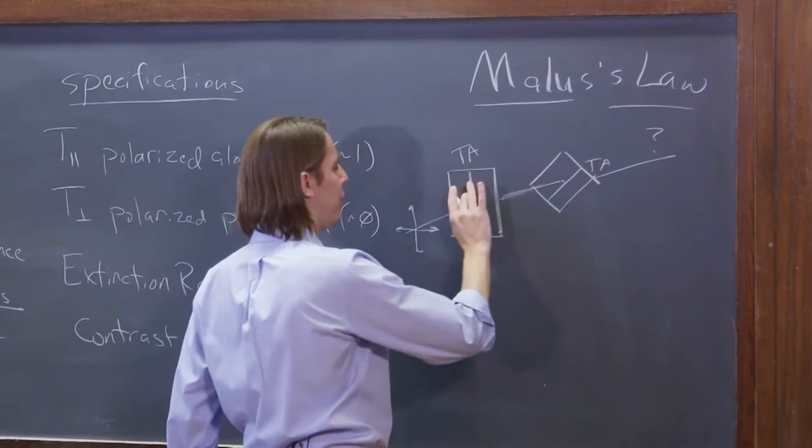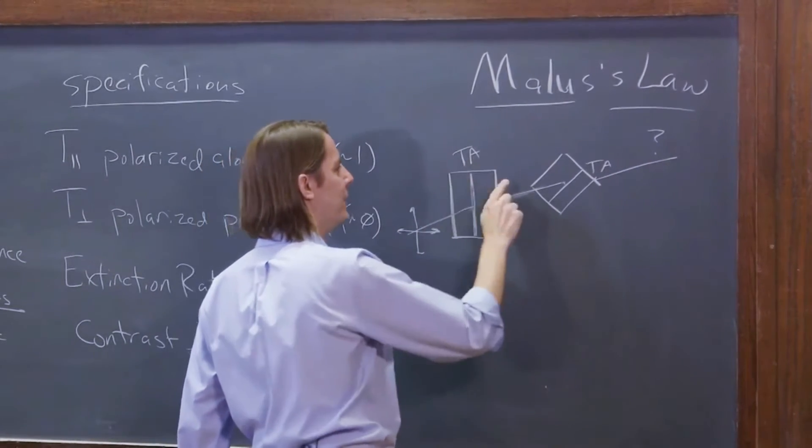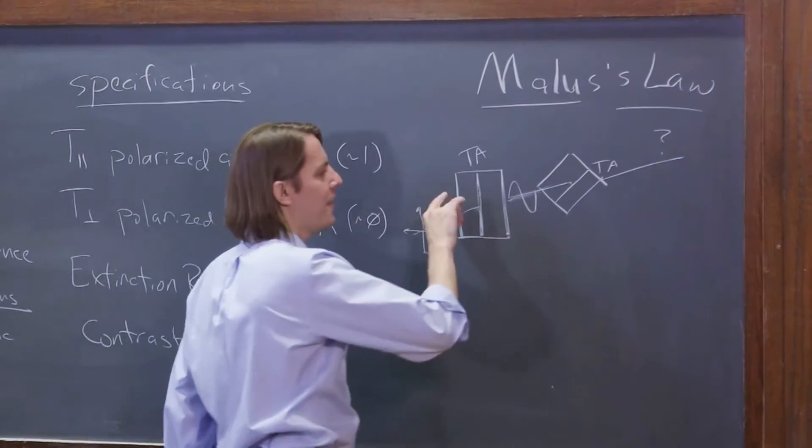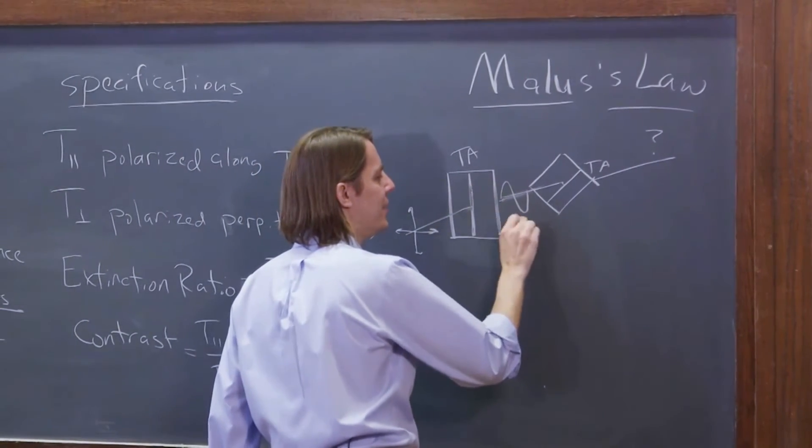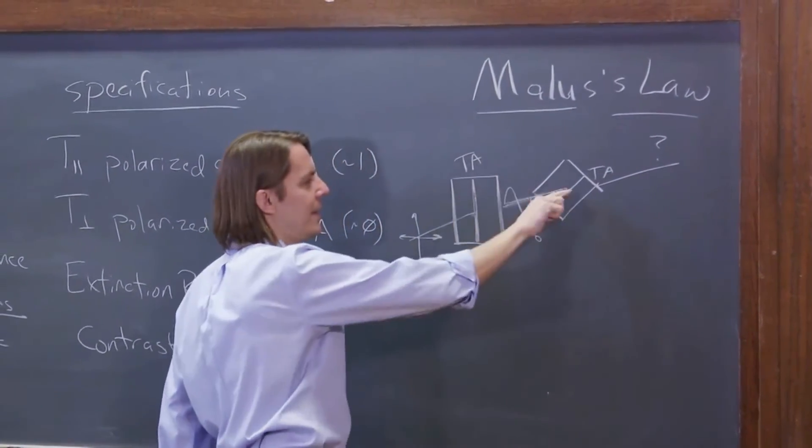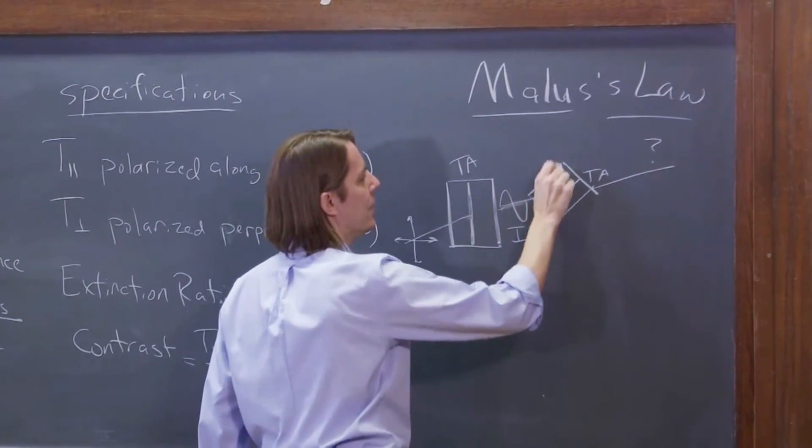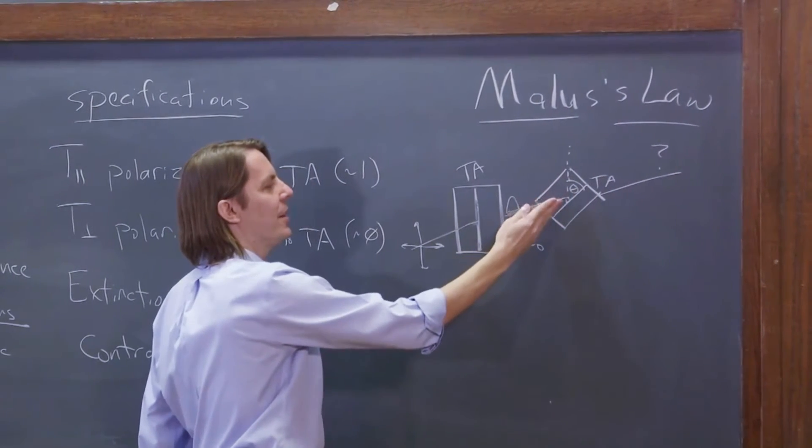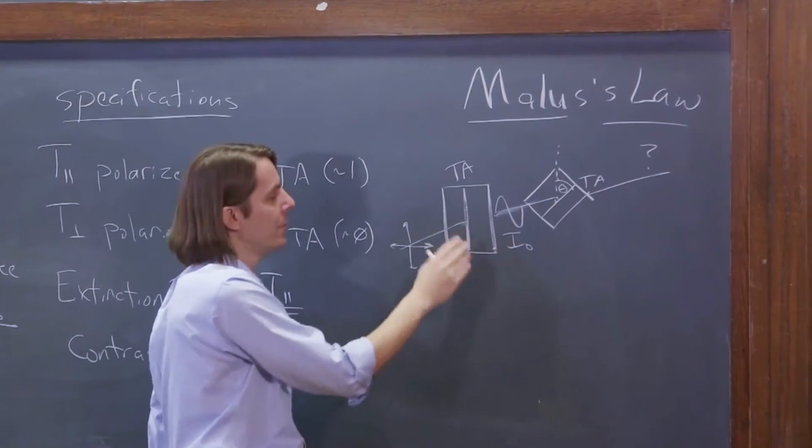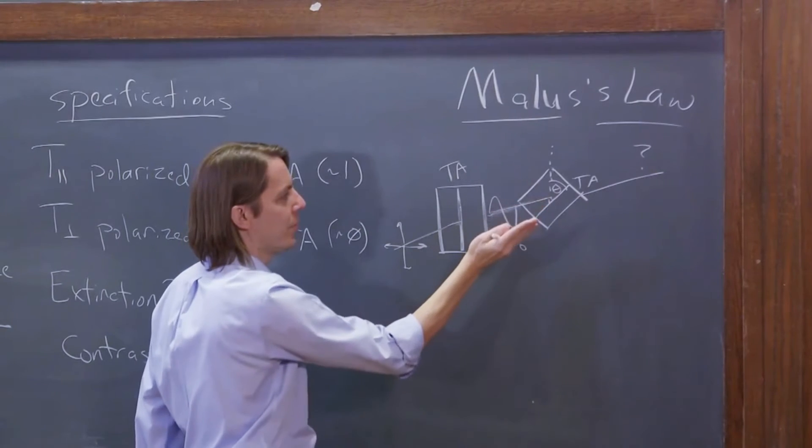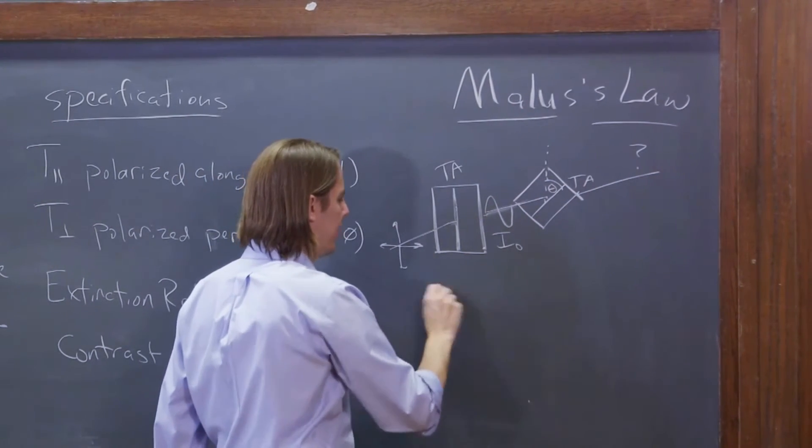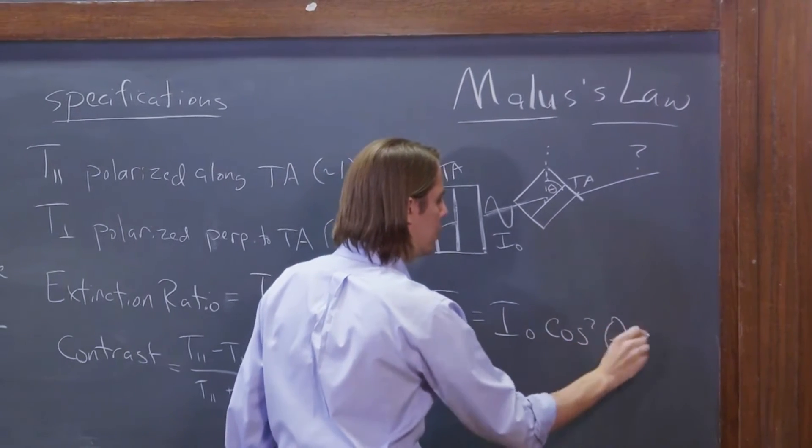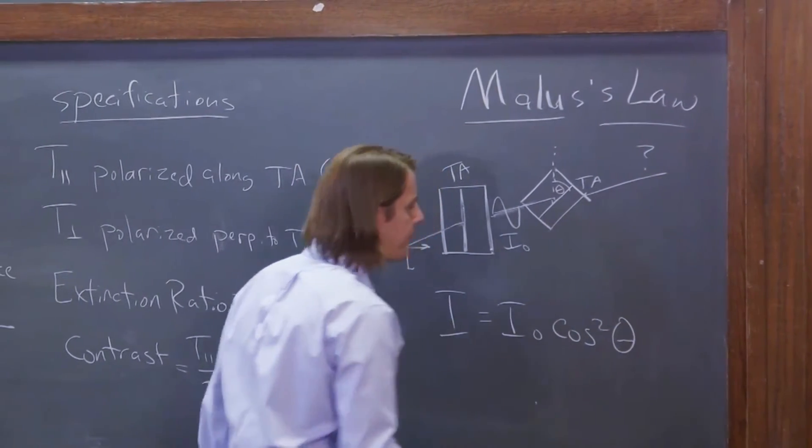Okay. So we know that through the first polarizer, if it's unpolarized light and the TA is up, we're going to get light polarized like that. So we have polarized light along this TA. It's some irradiance I naught hitting this polarizer and we're at some angle theta. So the second polarizer is turned at an angle theta with respect to the first polarizer. This one made light up. This one is turned theta. What comes out? What comes out I is I naught cosine squared theta.